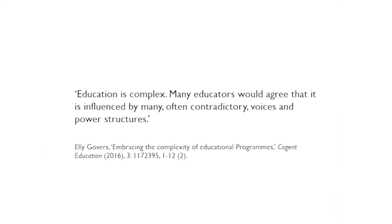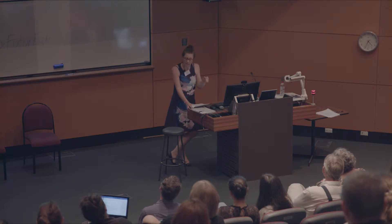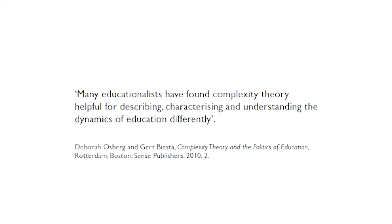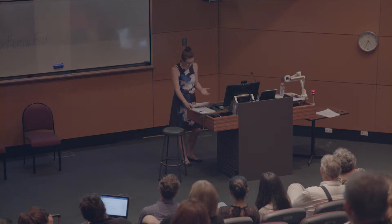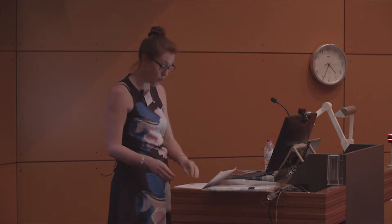Ellie Govis makes this point quite clearly when she tells us that education is complex, and many educators would agree that it's influenced by many often contradictory voices and power structures. If education is complex — again using that term in its technical sense — then complexity theory is of value to understanding its processes. As Deborah Osberg and Gert Biesta tell us, many educationalists have found complexity theory helpful for describing, characterizing and understanding the dynamics of education differently. One of the main reasons for this is that it allows us to see the unpredictable, generative character of educational processes and practices in a positive light. Complexity theory values this unpredictability, and that makes it valuable in an unpredictable world, as we saw in the opening quote from Edgar Morin.